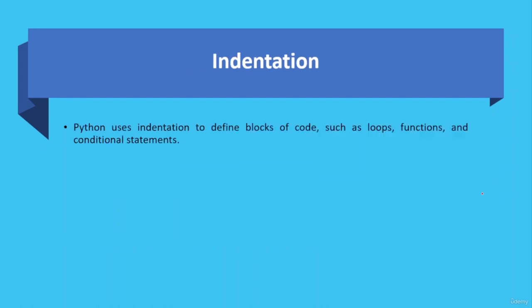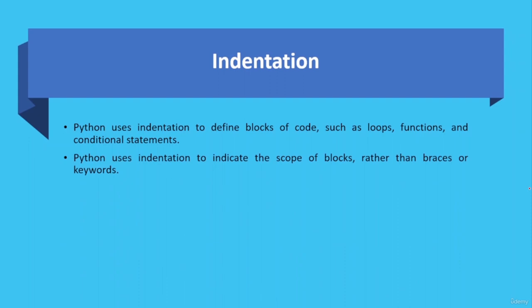Indentation in Python is a way of indicating blocks of code associated with a control flow statement such as a for loop or if statement. In Python, indentation is used instead of curly braces or keywords to define the scope of a block of code. Python uses indentation to define blocks such as loops, functions, and conditional statements. Each line of code that is part of the block must be indented the same number of spaces — it is widely accepted convention to use four spaces.